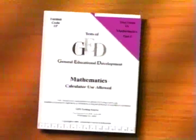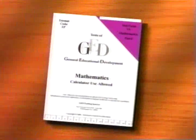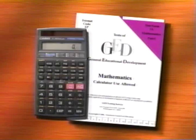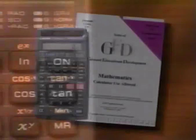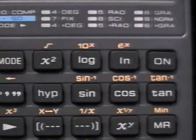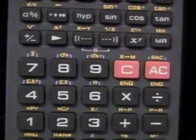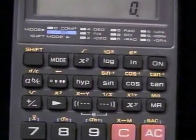The GED mathematics test is in two booklets, with 25 questions in each. You're allowed to use a calculator only in booklet or part number one. You may not need a calculator for every question in part one, but the calculator will be available for those questions where it would be helpful to you.